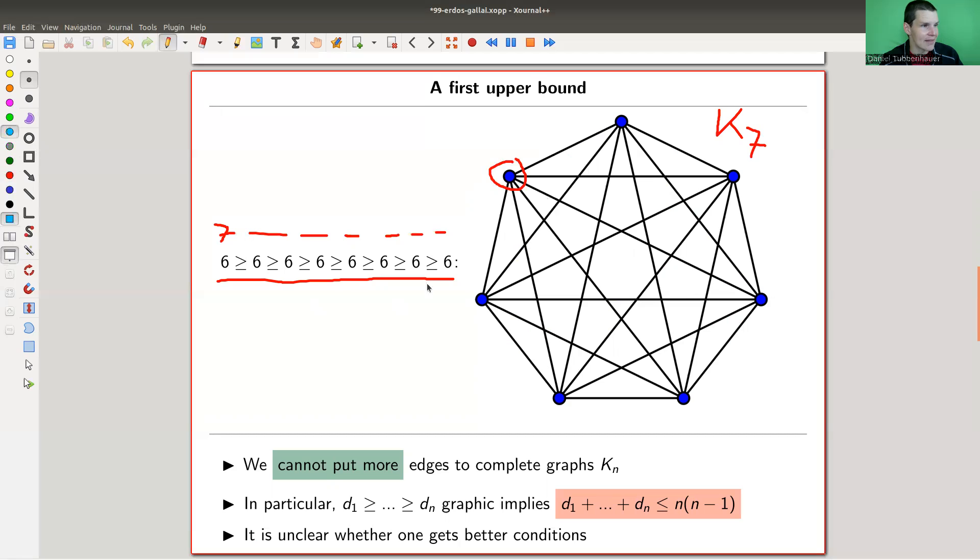So those sequences can't be graphic. And note here again, that the number of entries is the number of vertices. Of course, I could have a seven, but then I would need more entries, right? So in particular, what I'm just saying is graphic implies this bound on the sum of the integers that I'm considering here. Why is this bound?